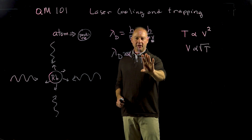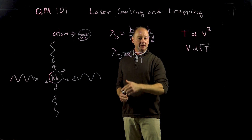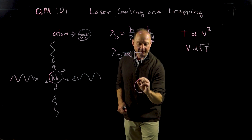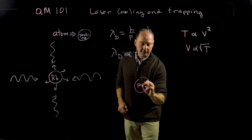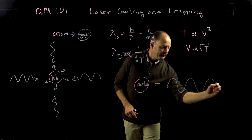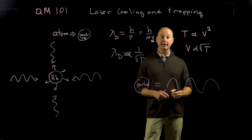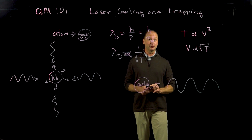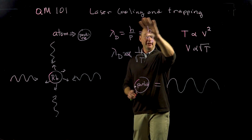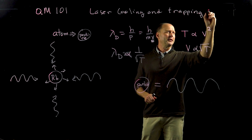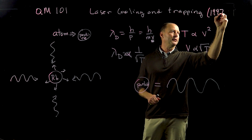A smaller temperature means the de Broglie wavelength goes up. Instead of the atoms behaving like particles, the atoms instead behave like waves. So we're looking at the quantum mechanics of atoms behaving like waves by lowering the temperature — laser cooling and trapping. And by the way, that was the 1997 Nobel Prize.